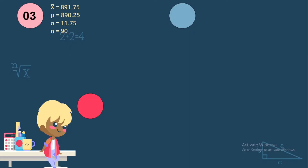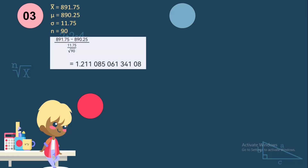Now let us move to number 3. The sample mean is 891.75 and the population mean is 890.25. The population standard deviation is 11.75 and the sample size is 90. Using the formula: 891.75 minus 890.25 over 11.75 divided by the square root of 90. Solving step by step, that equals 1.211. So our Z value is 1.211.